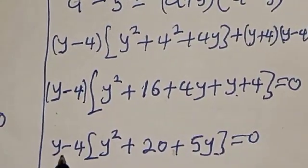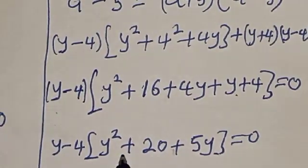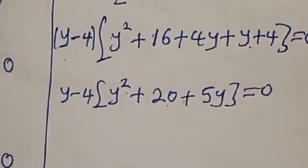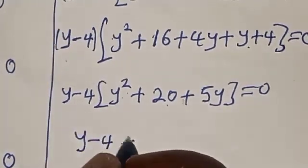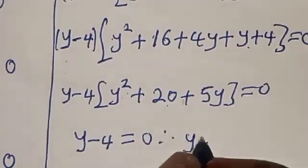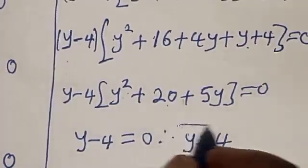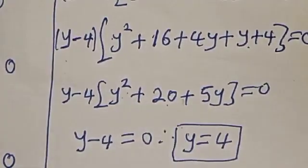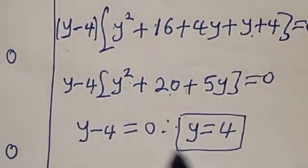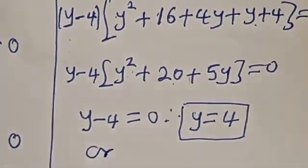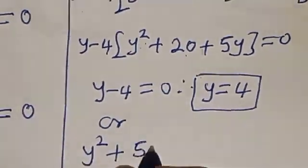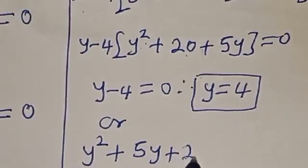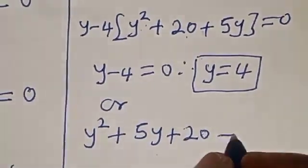Now we have two cases here. Case 1: y minus 4 equals 0, therefore y equals 4 — that is one of the values of y. Or Case 2: y squared plus 5y plus 20 equals zero.